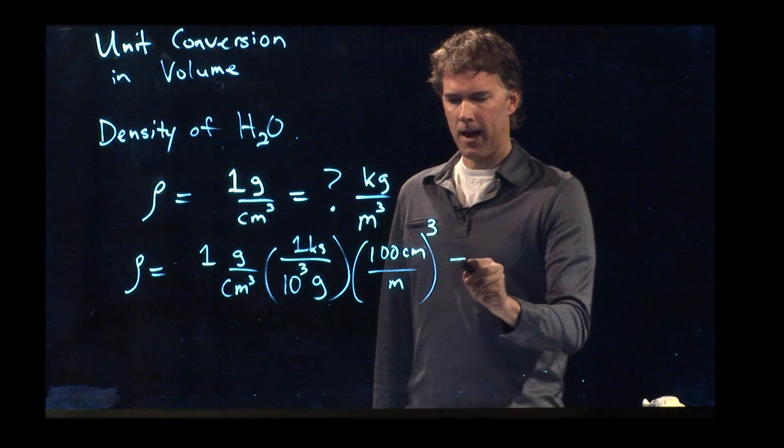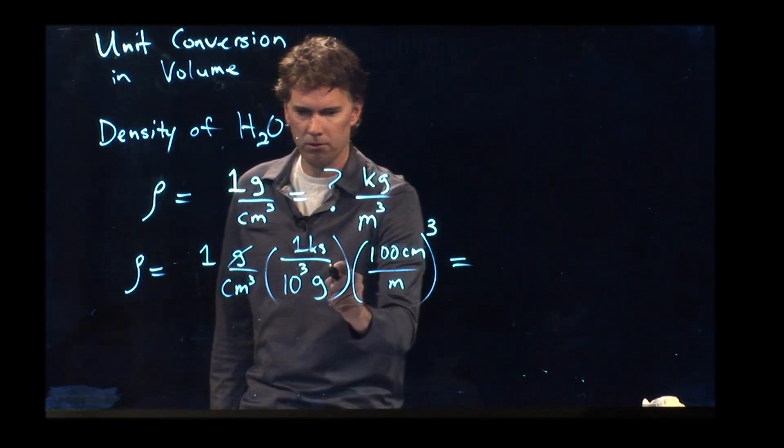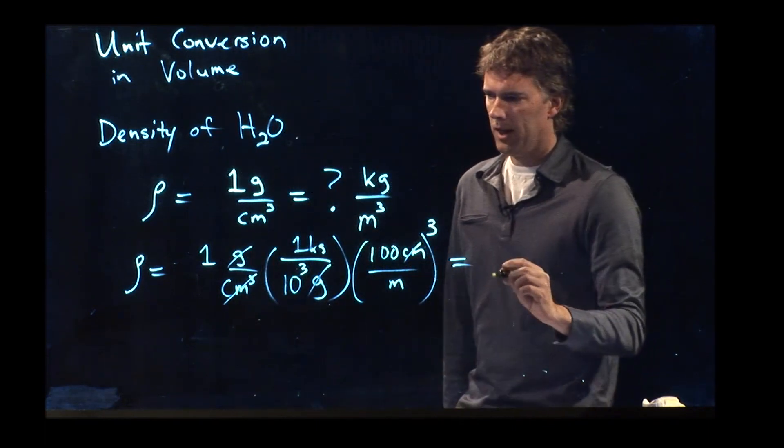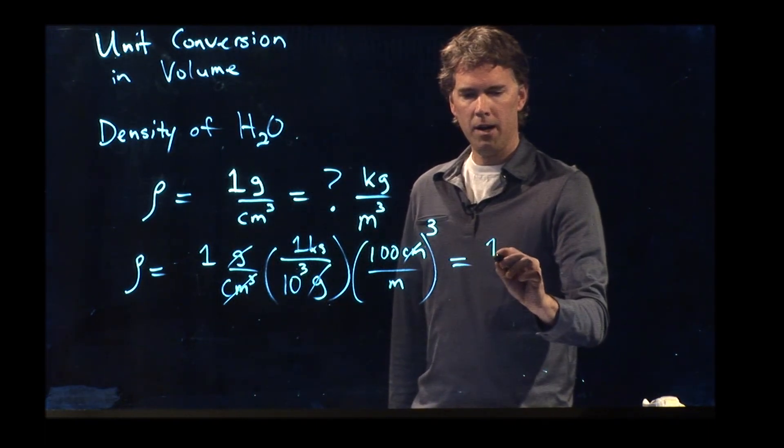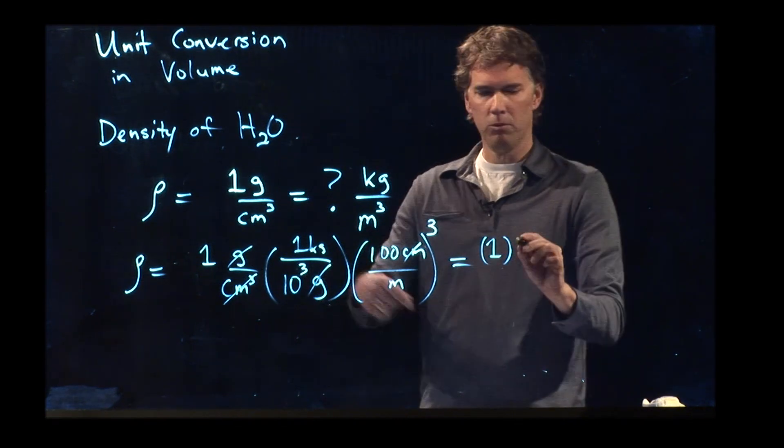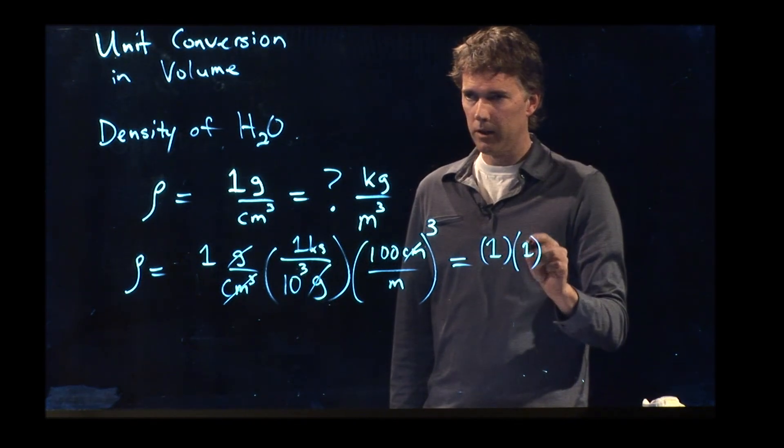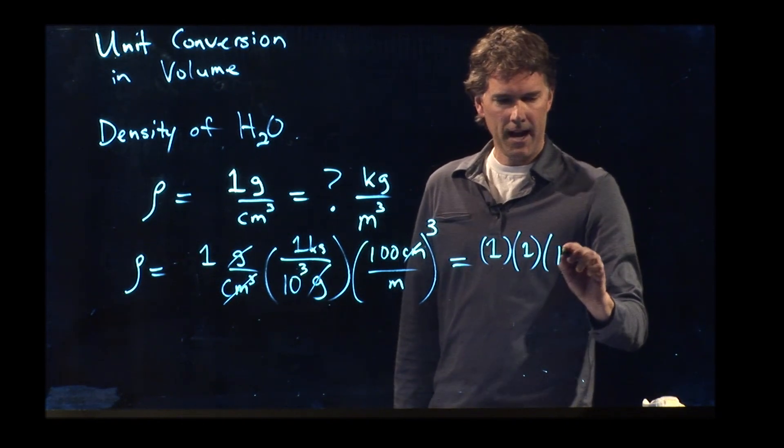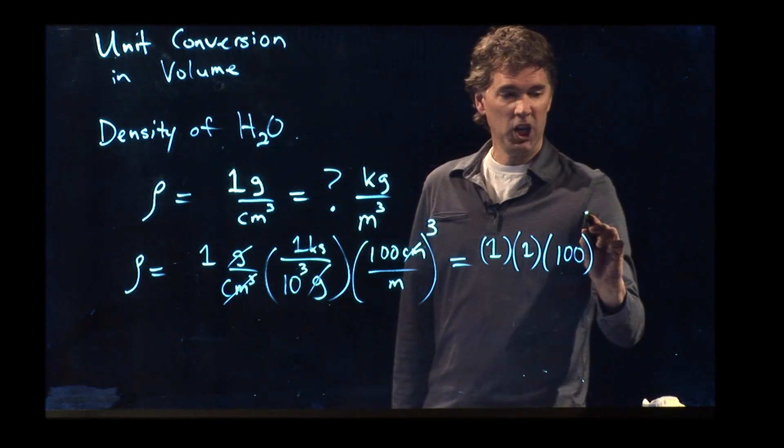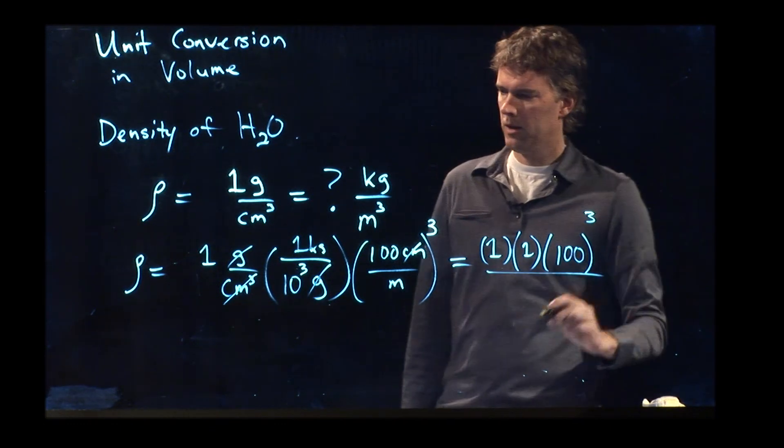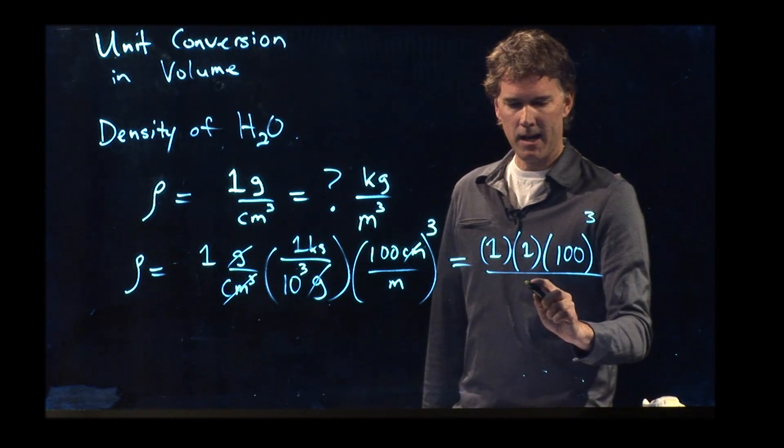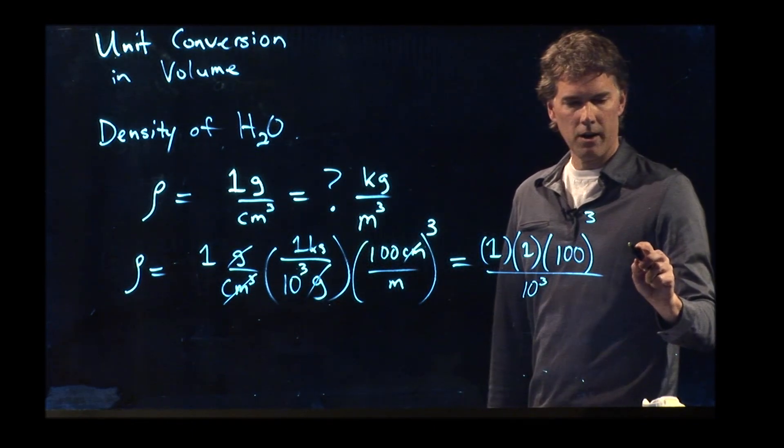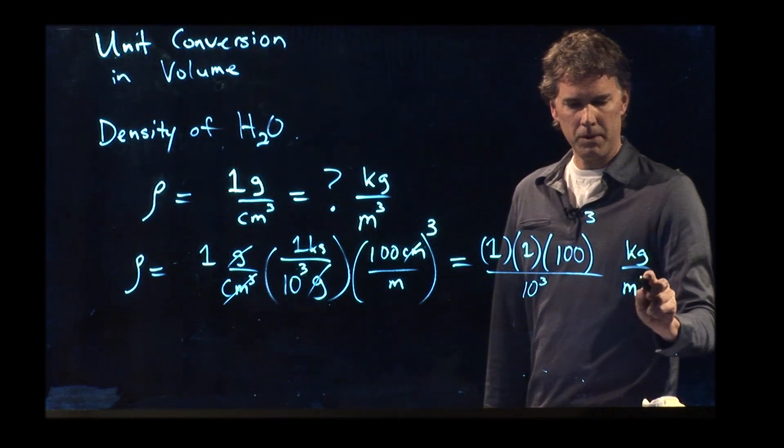Now look what happens. We're going to get rid of grams. We're going to get rid of centimeters cubed. And we are left with one times one. One times one is one in the limit of small ones. Now we're going to take a hundred and cube it, and we are dividing by ten to the three. Our units are kilogram per cubic meter.